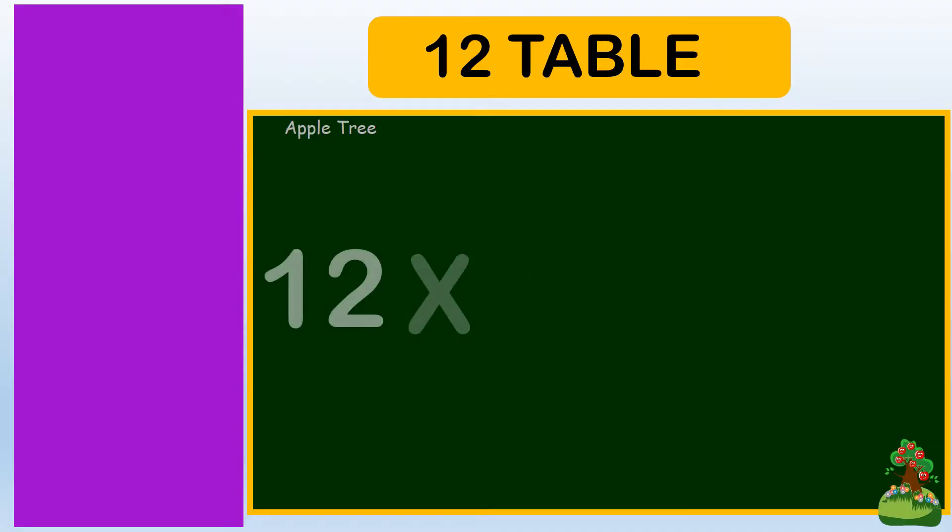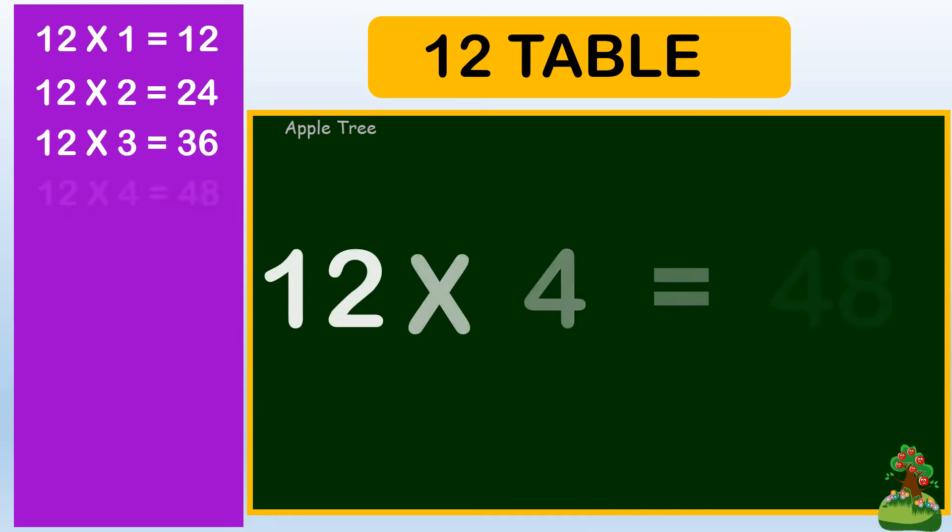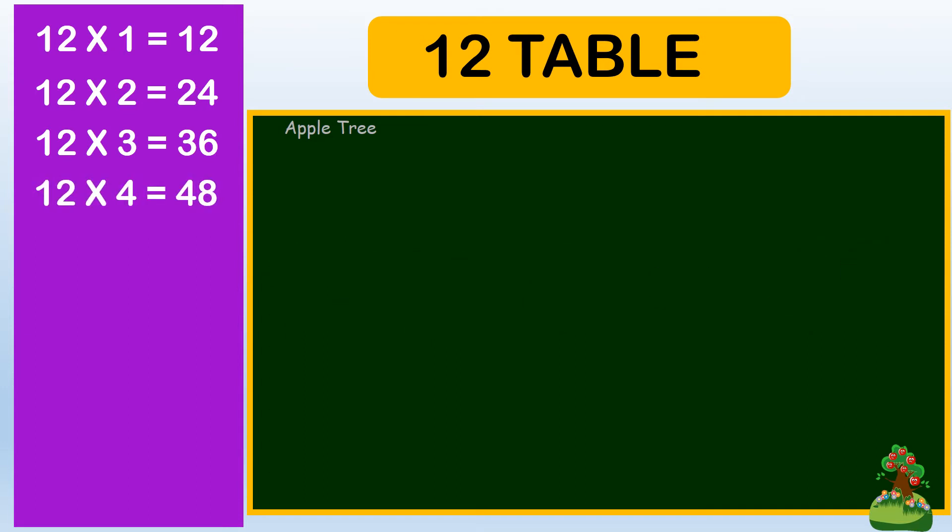12 ones are 12, 12 twos are 24, 12 threes are 36, 12 fours are 48, 12 fives are 60,